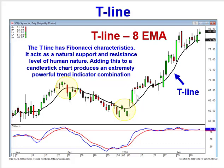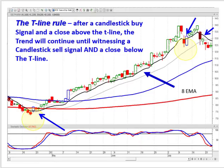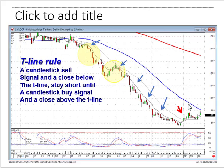If you see a candlestick buy signal and a close above the T line, you can stay long until you see a sell signal and a close back below the T line. So if you see the probabilities in your favor by seeing an oversold condition and a close above the T line — here's a little kicker signal — you can stay long until you see that sell signal and close below the T line. The same scenario is true on the downside: if you see sell signals and close below the T line, you can stay short until you see a buy signal and a close back up above the T line.